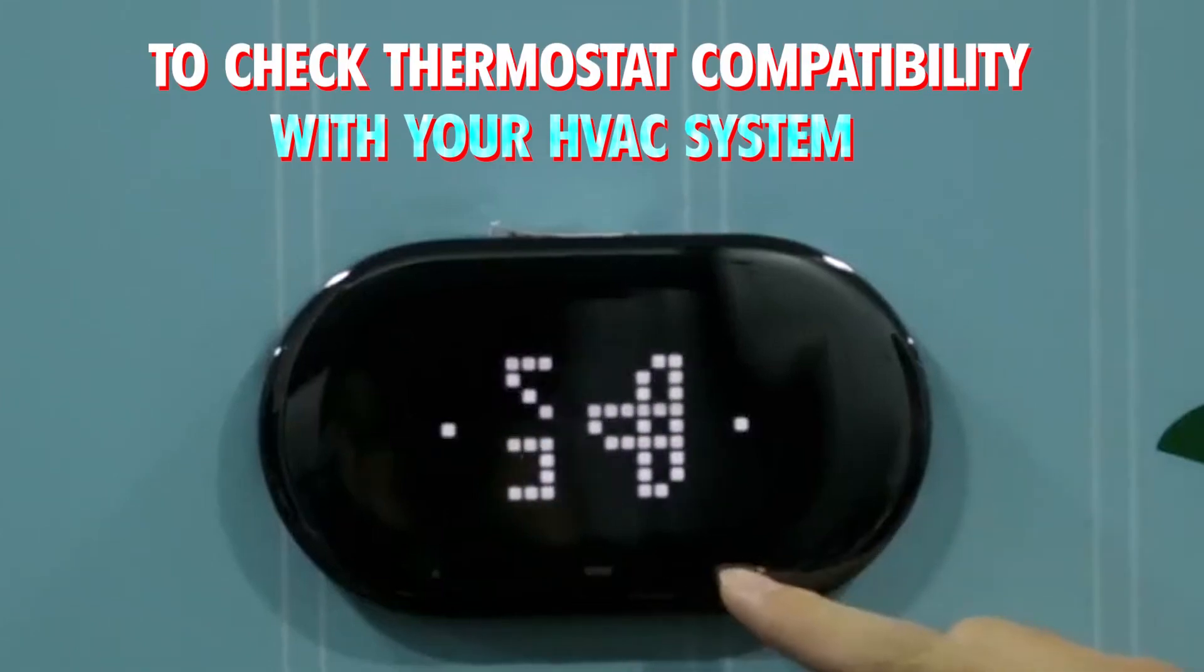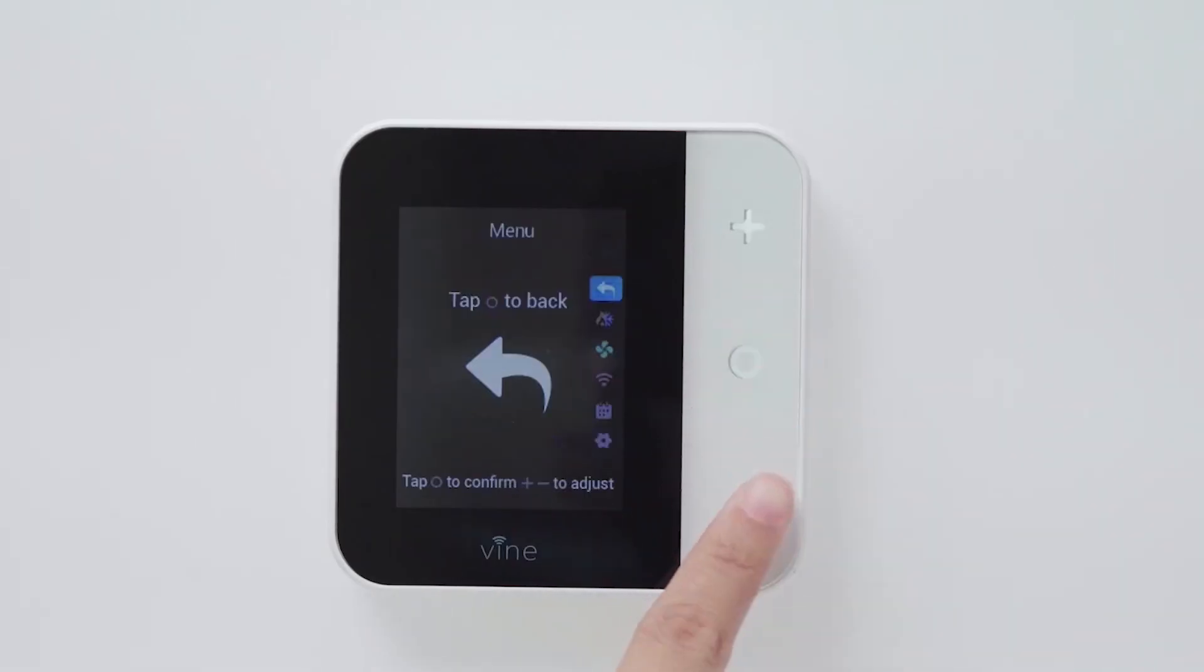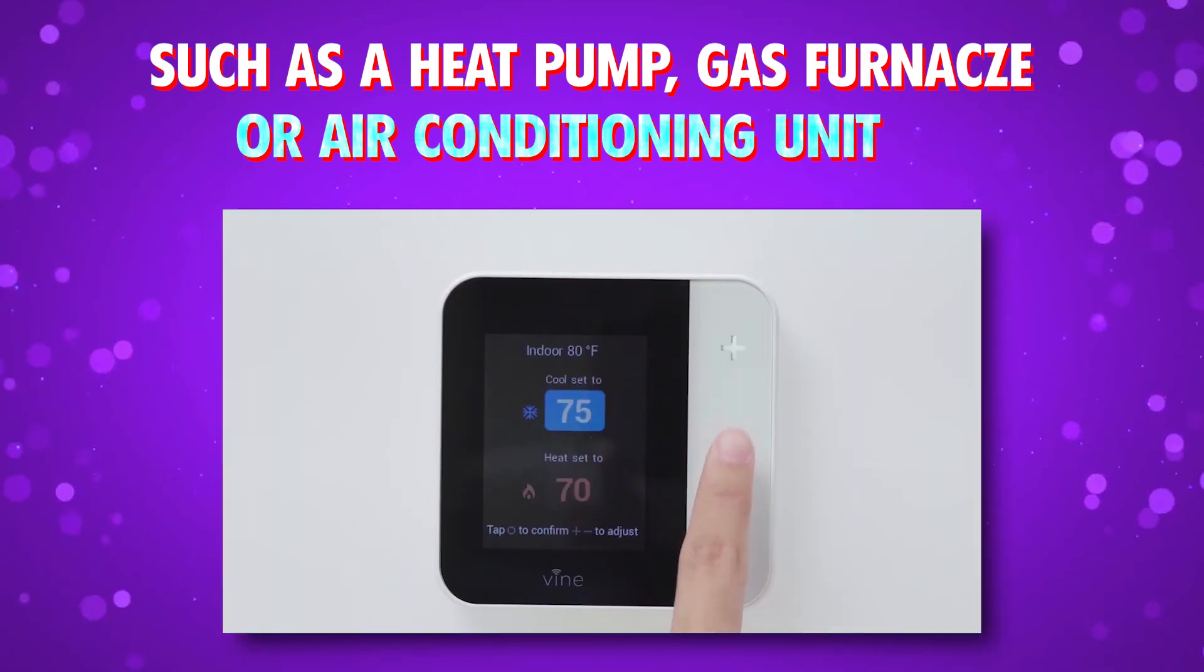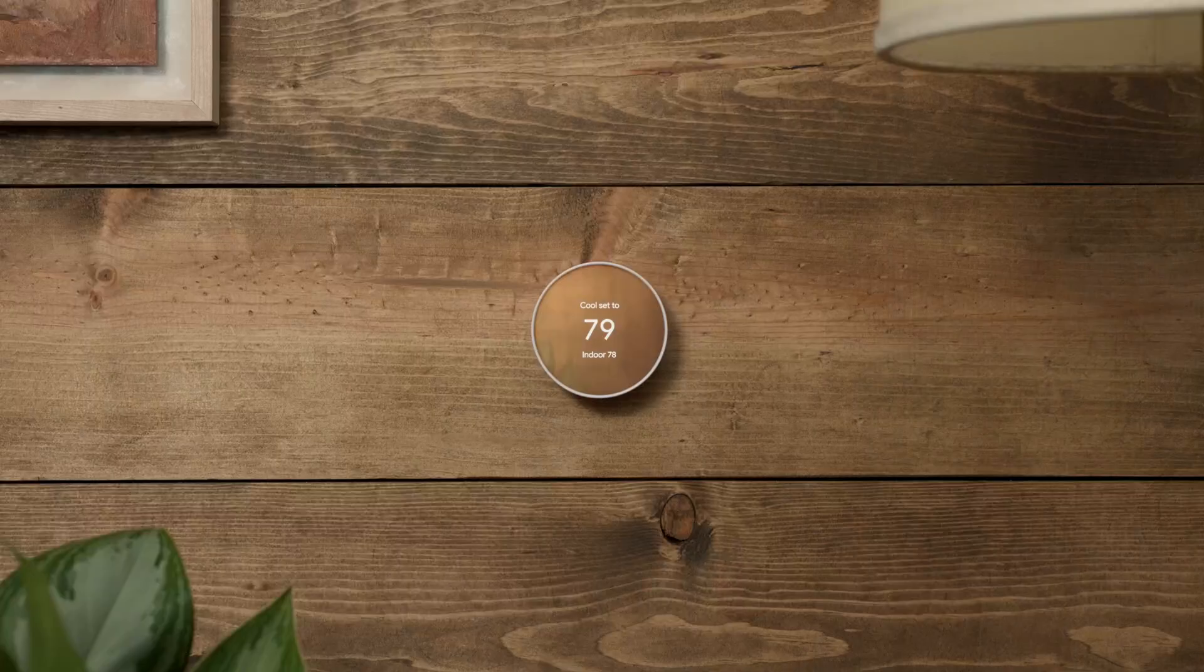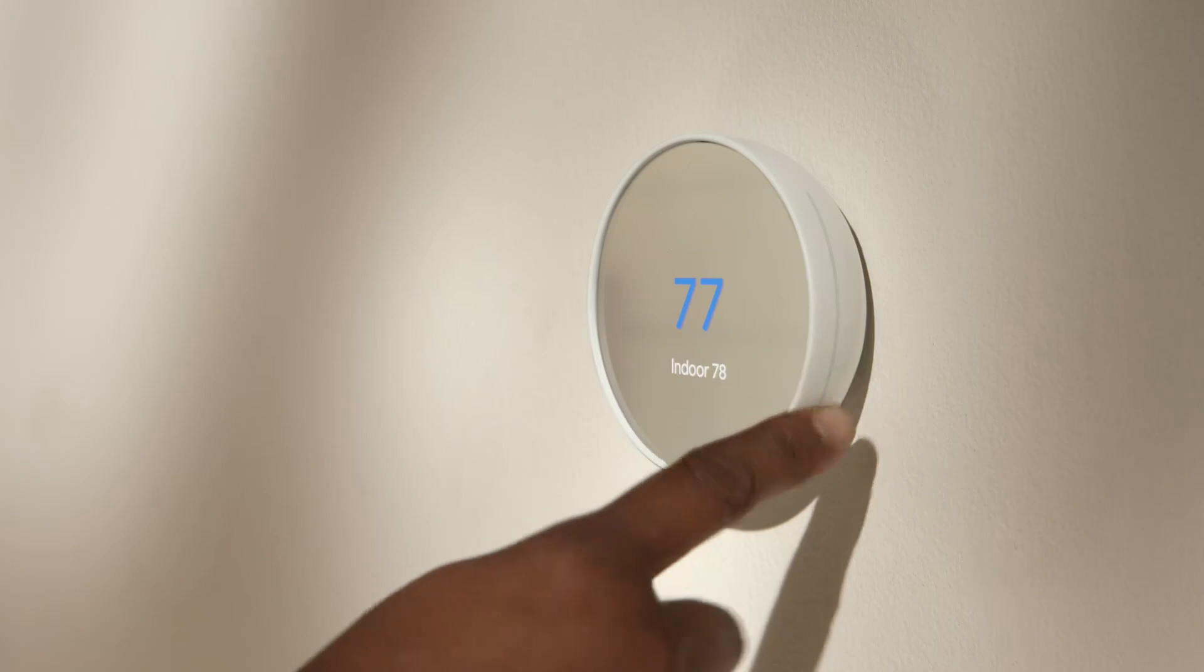To check thermostat compatibility with your HVAC system, start by identifying your system type, such as a heat pump, gas furnace, or air conditioning unit. This ensures the thermostat supports your specific setup. Heat pumps, for example, need thermostats with a reversing valve feature, while other systems don't.